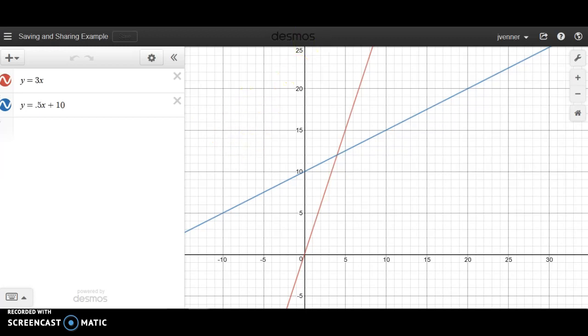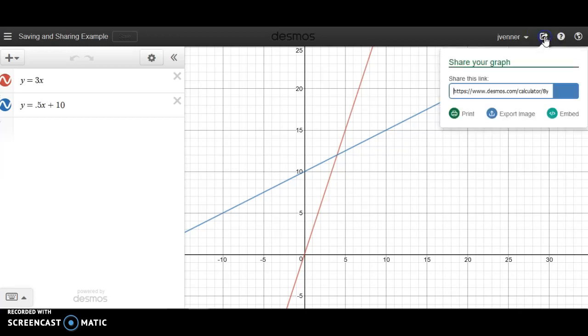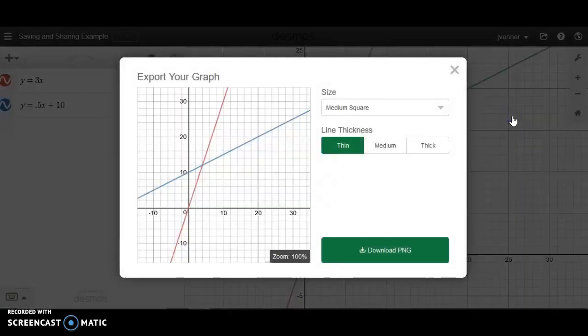Another way to share it would be to embed it or send it as an image. You can export it as an image. This allows you to download and save an image file and then attach the image file to an email.